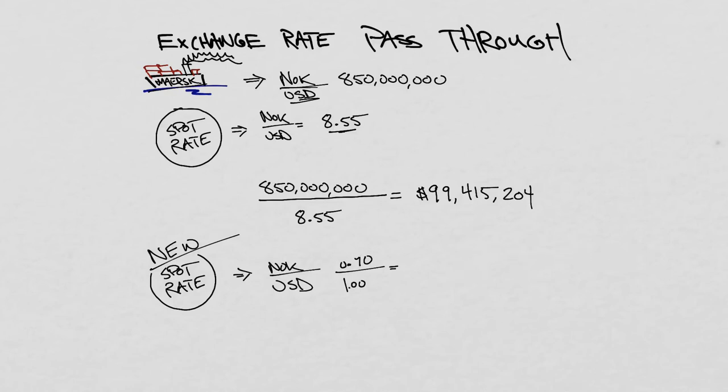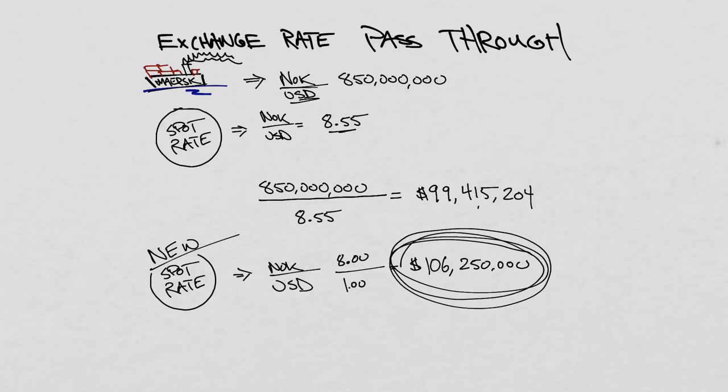The company in other words doesn't have the option of passing through all of its exchange rate effect that just occurred. Perhaps, for example, it's gauged its customers in the United States and realized that it can only raise prices. It can only pass through not this full 55 cent change in exchange rates but only say half of that, a 50 percent pass-through or a 27.5 Kroner per USD difference.